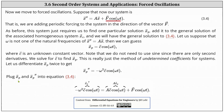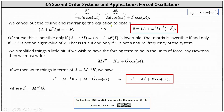We plug x sub p and x sub p double prime into equation 3.4. Dividing out the cosine and rearranging, we obtain the sum of A and omega squared I times C equals negative F. Solving for C, we have C equals the inverse of the sum of A and omega squared I times negative F. This is possible only when the sum of A and omega squared I is invertible, which holds if and only if negative omega squared is not an eigenvalue of matrix A — equivalently, omega is not a natural frequency of the system.